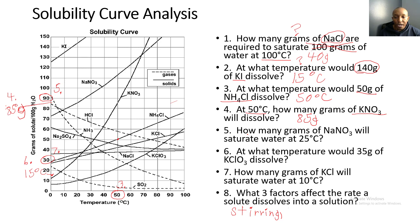Number five: how many grams of NaNO₃ will saturate water at 25 degrees Celsius? Here's 25 degrees Celsius — bring it all the way up until we hit the line for NaNO₃, bring it across, and the answer is 90 grams.